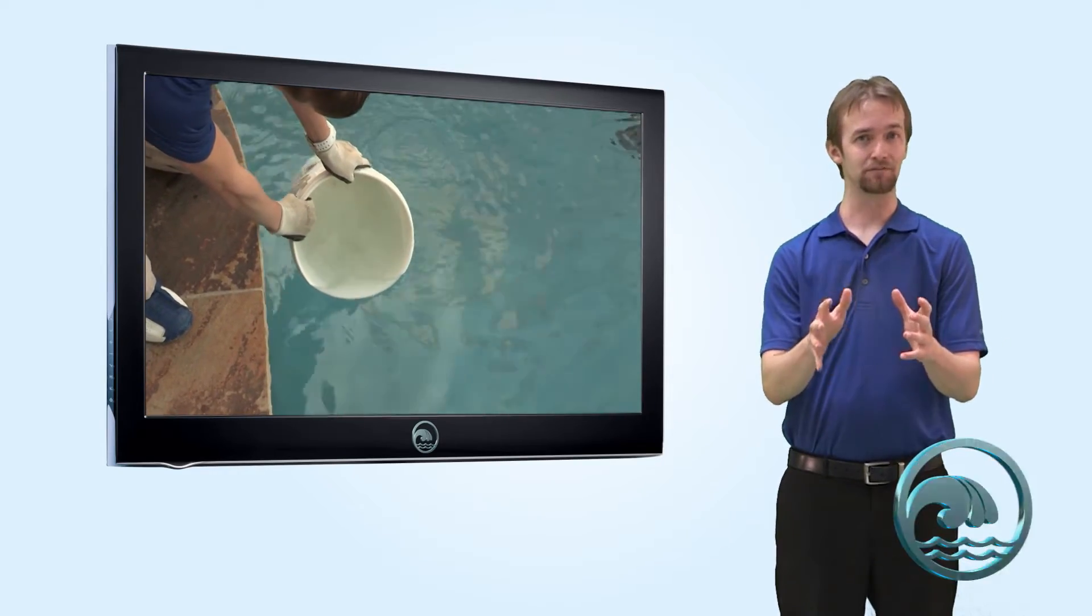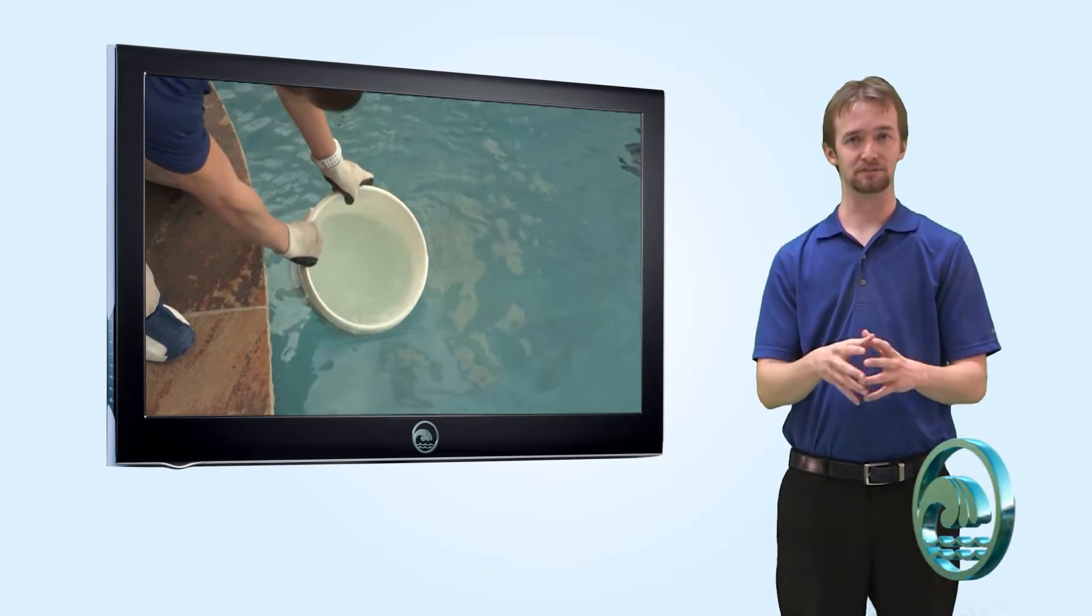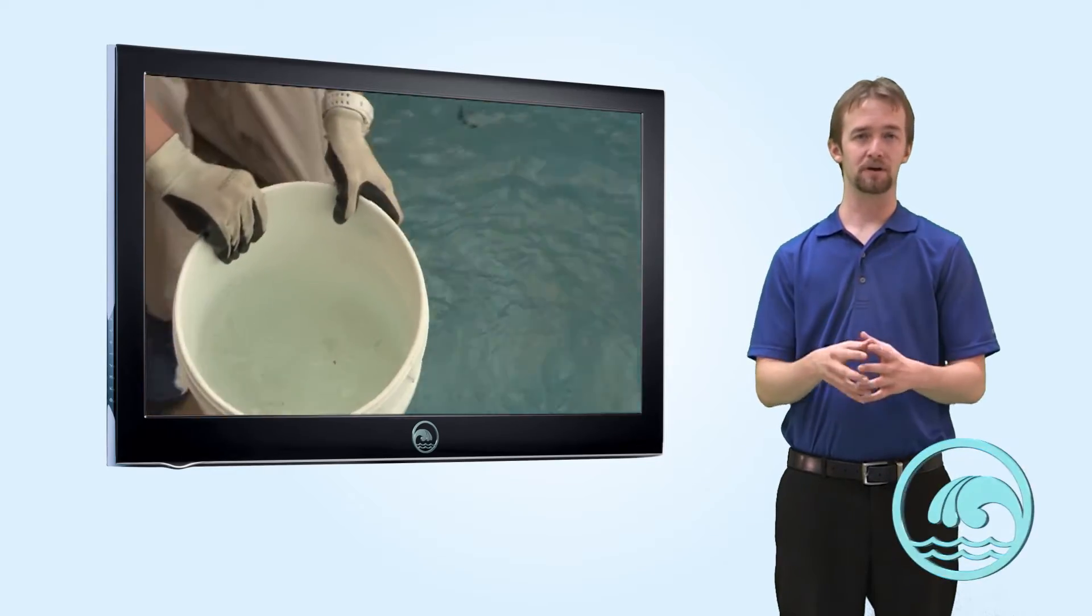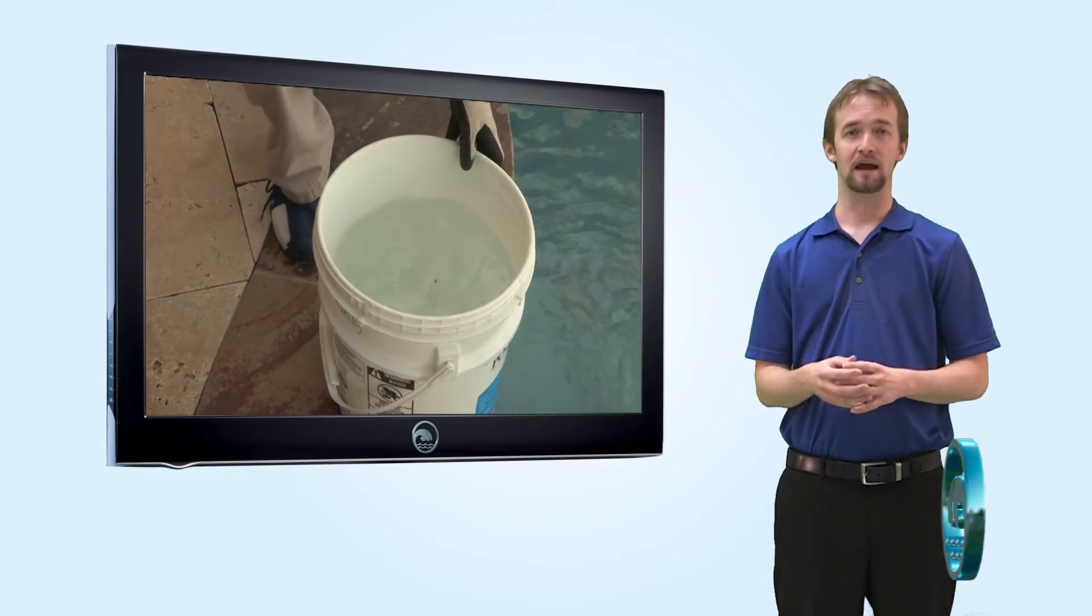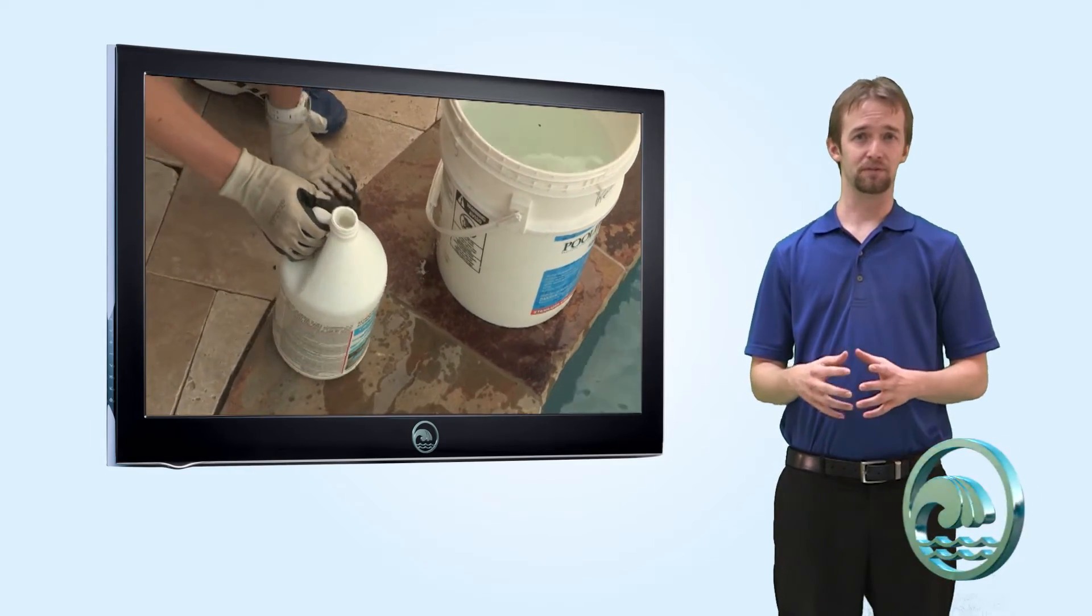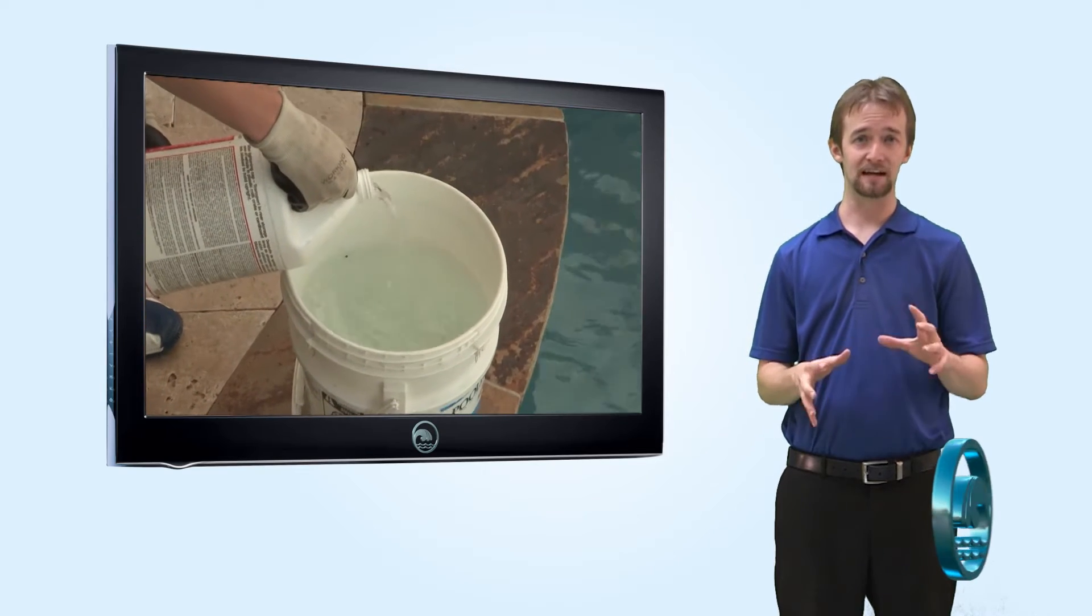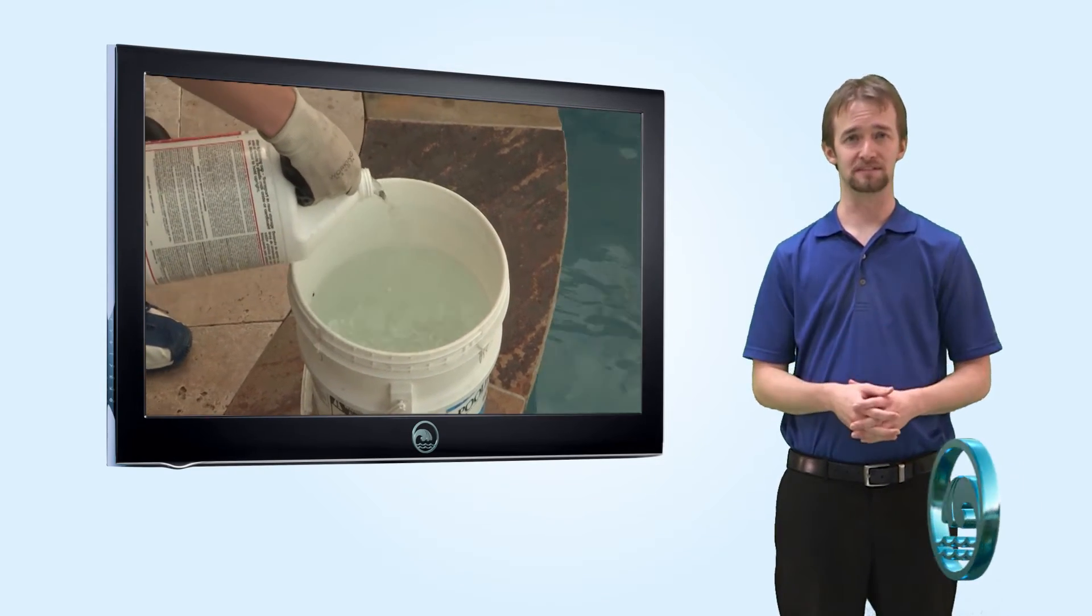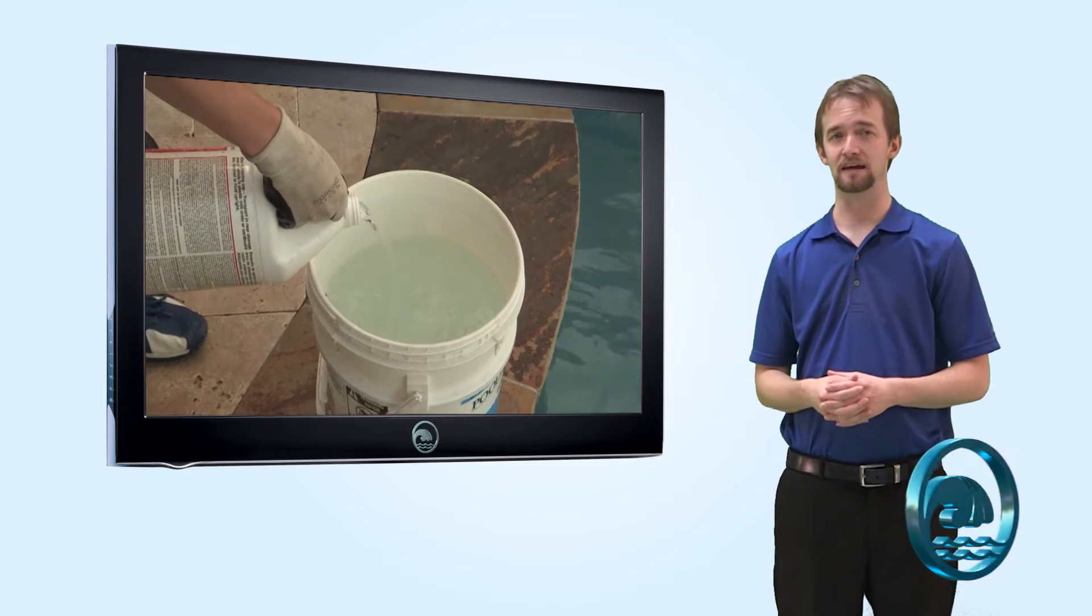First thing you're going to want to do is get a clean 5 gallon bucket that hasn't been used for anything else except for muriatic acid. Fill the bucket up with about 4 gallons of water and then add the gallon of acid. Let it set for about a minute so it can mix in and then take that and simply pour it around the perimeter of the pool. Repeat that process until you've added all the acid that you need to add.